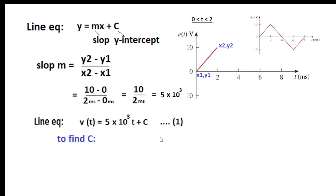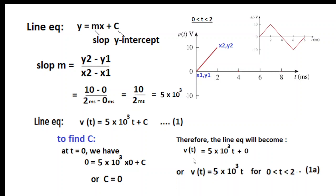To find C at time t equals 0, we have v(t) equals 0. At t equals 0 we have v(t) equals 0 equals 5 times 10^3 times 0 plus C, so C equals 0. So the final equation is v(t) equals 5 into 10 to the power 3 times t for the time limit 0 to 2 milliseconds.